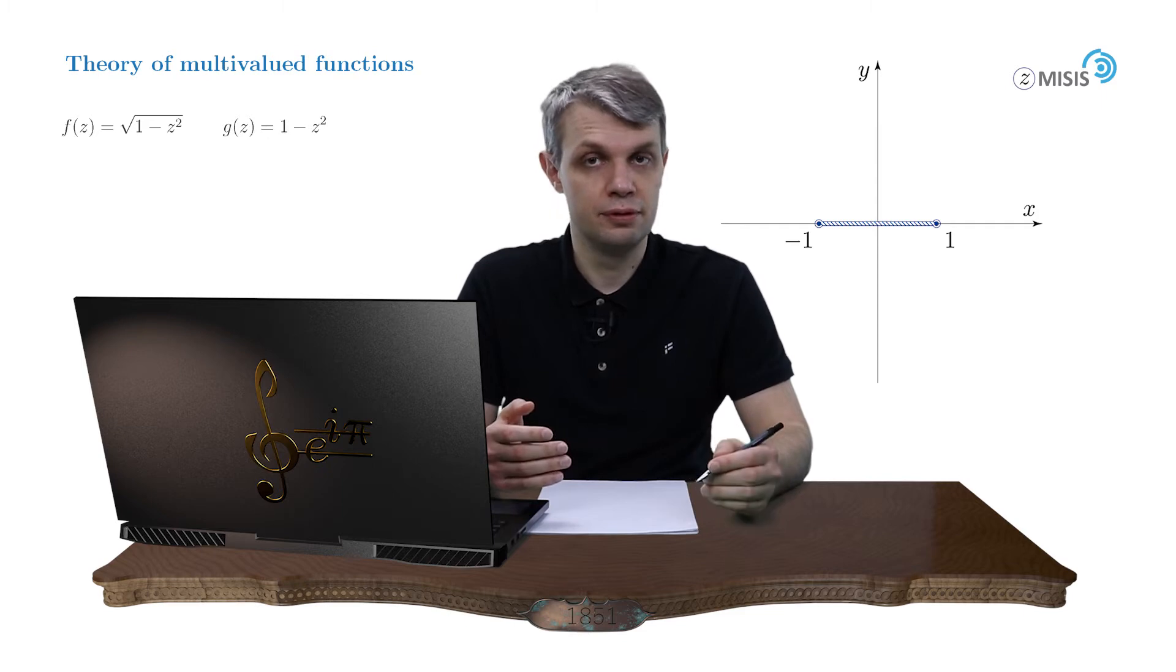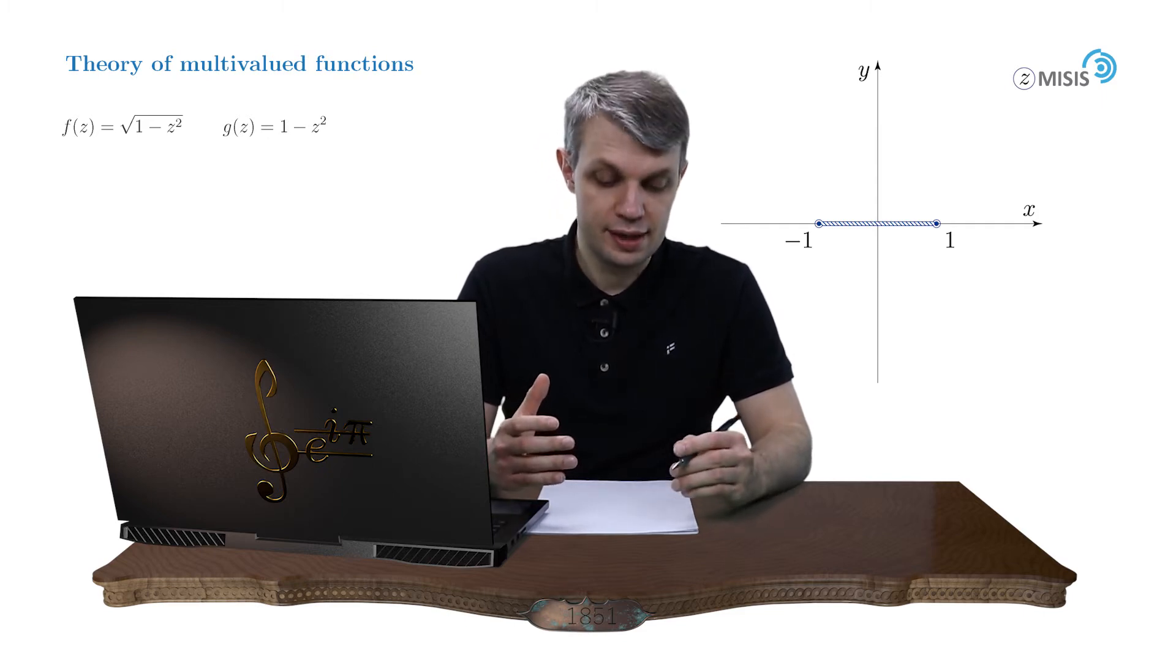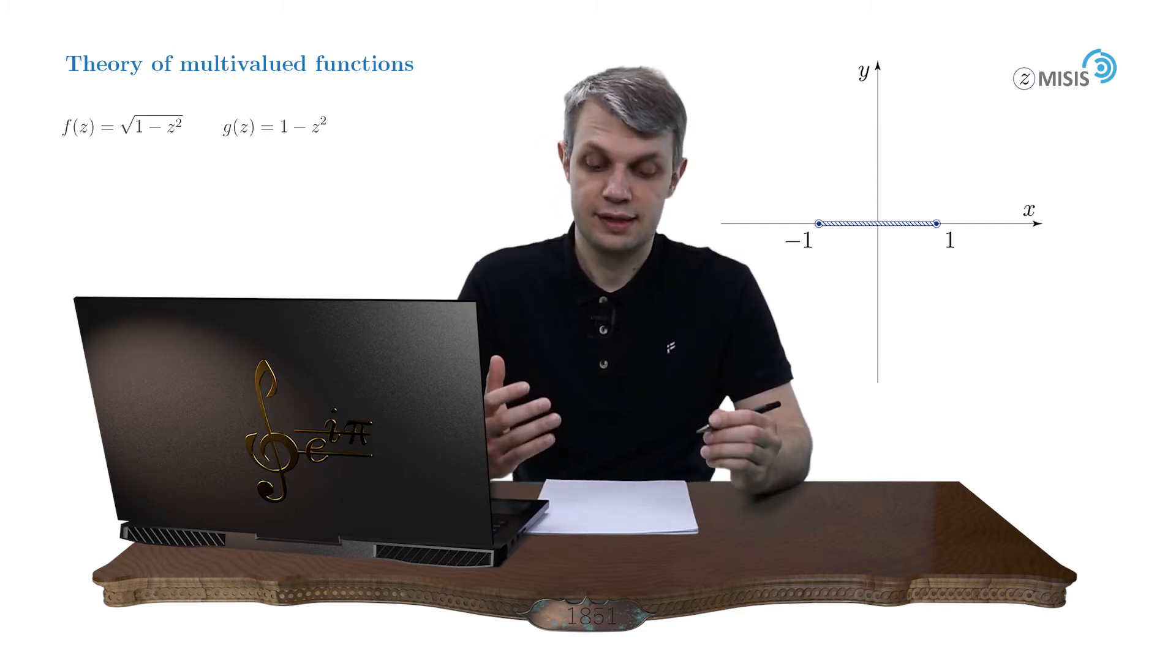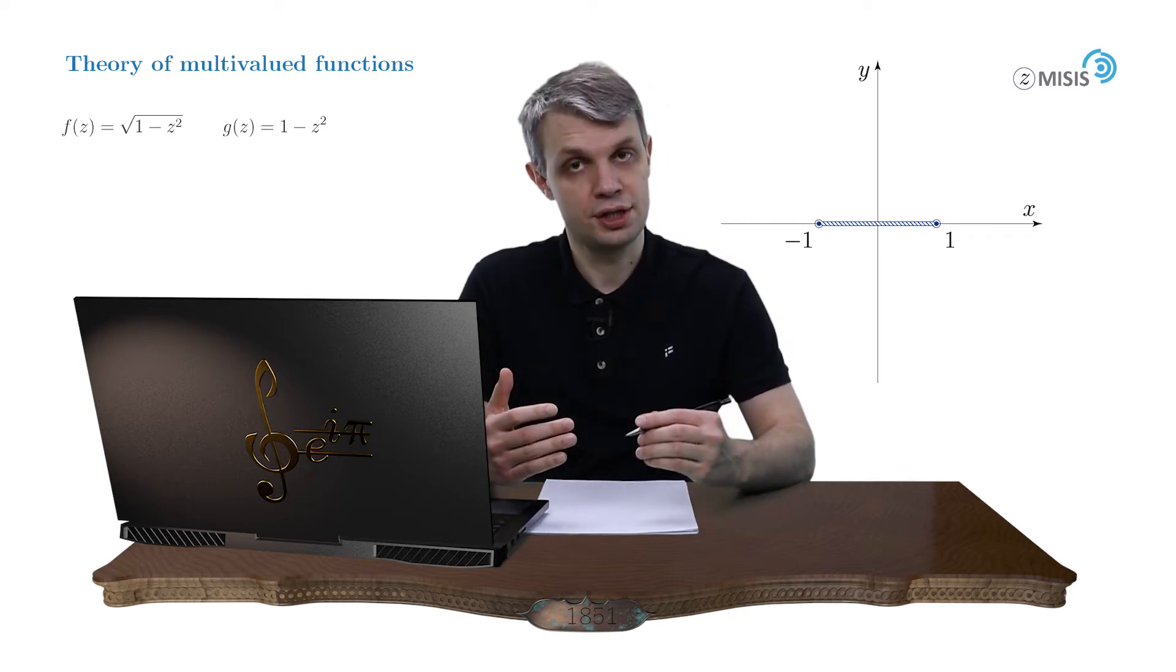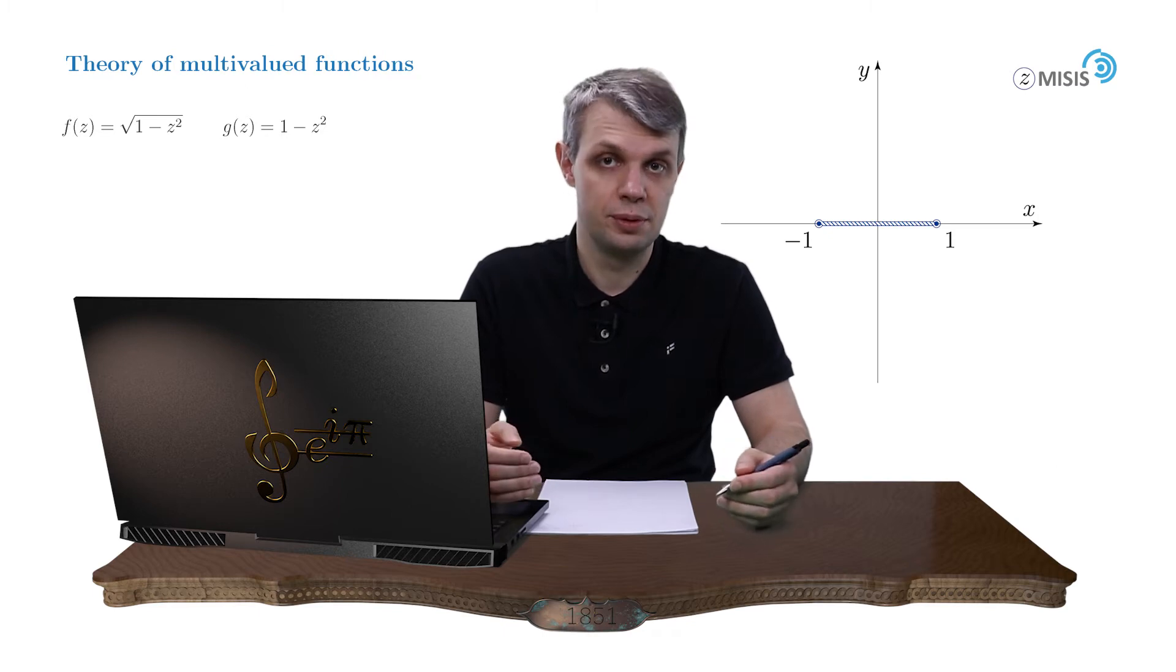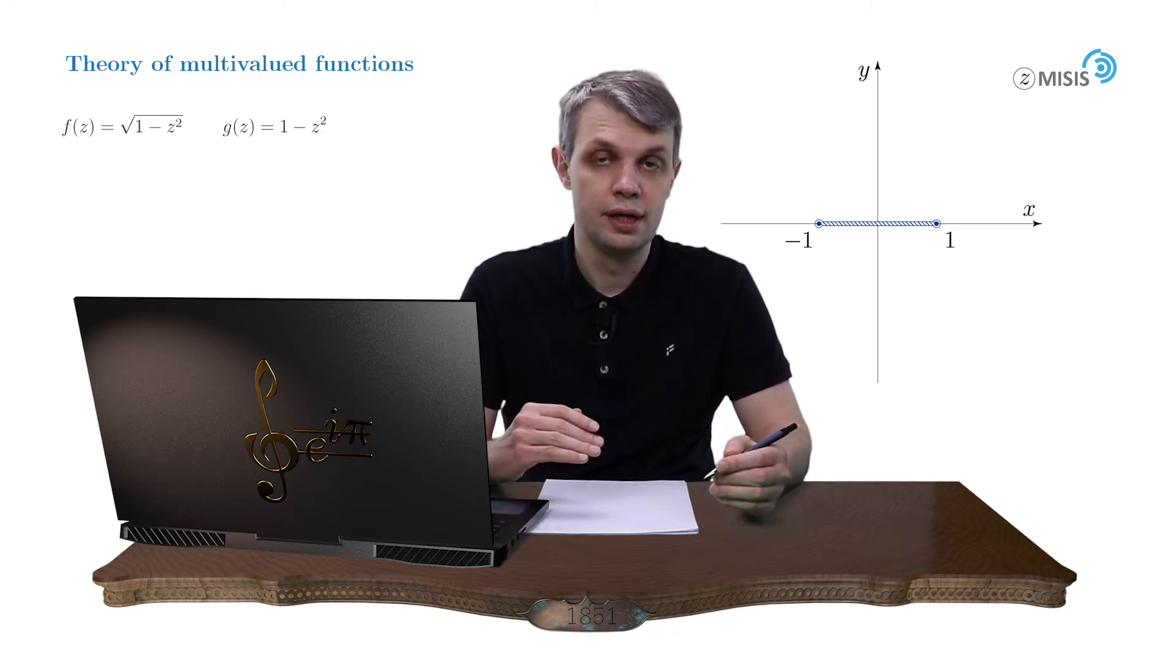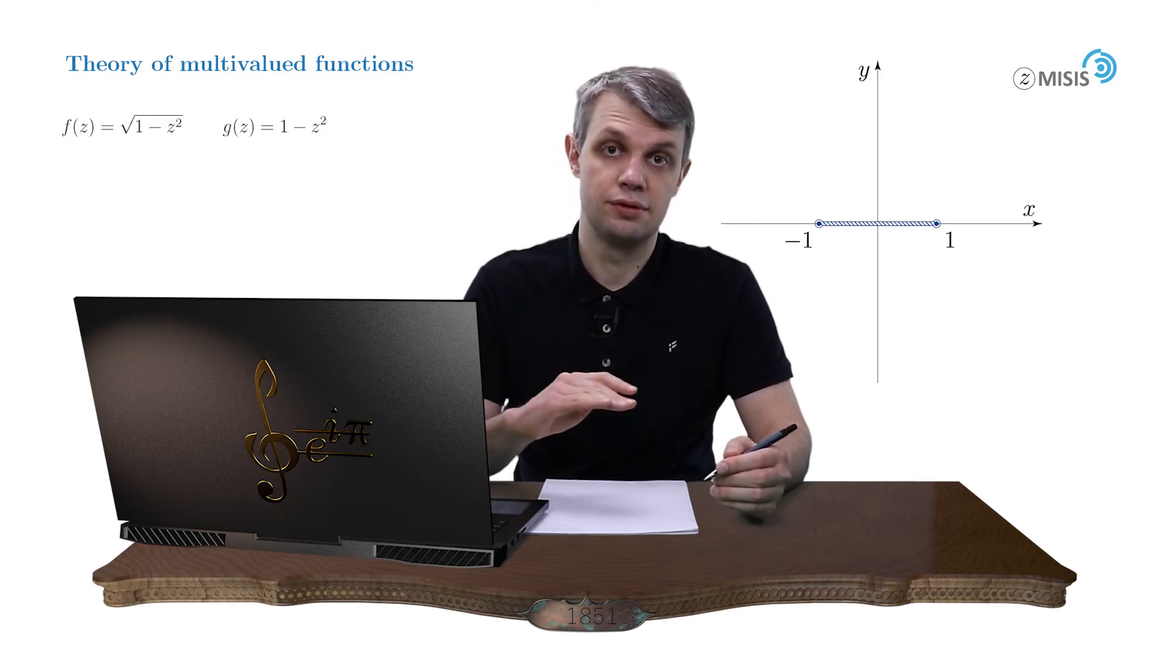In accordance to what was said before, now since the branch cut doesn't stretch to infinity, this Laurent expansion will have a universal look independent of a particular direction in which we go to infinity. So we need to choose the most suitable one and the most common choice is the direction along the real positive semi-axis, so to the right.